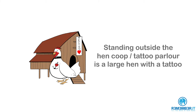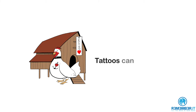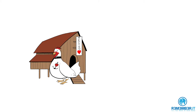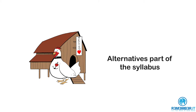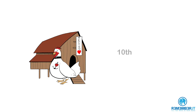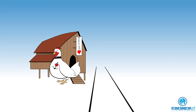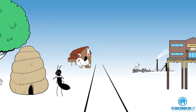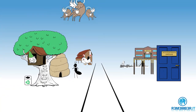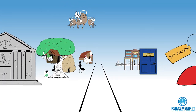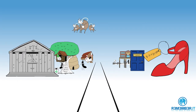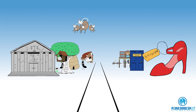The tenth and final location is the CFAVIL tattoo parlor, which happens to be in a hen coop. Standing outside is a large hen with a tattoo. Tattoos can be associated with an alternative lifestyle, so this is where the alternatives part of the syllabus is covered. You know it's the tenth location because hen rhymes with ten.